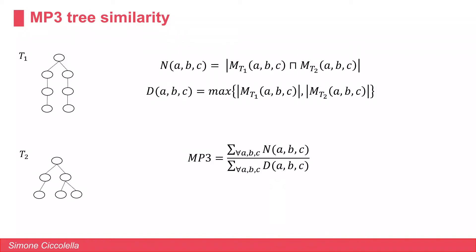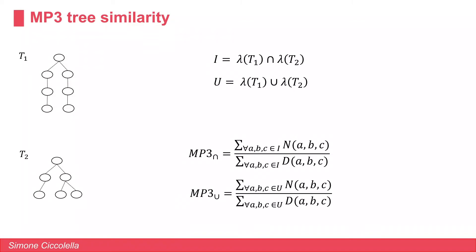To define our measure — the MP3 tree similarity measure — we need two additional variables. The variable m for triple (a, b, c) is the cardinality of the multi-set intersection of the multi-sets M for labels (a, b, c) in the first and second tree: basically the number of shared minimal tree topologies. And d for triple (a, b, c) is the maximum cardinality of the two multi-sets M. The MP3 tree similarity measure is thus the number of shared minimal tree topologies over the total number of possible tree topologies between two trees.